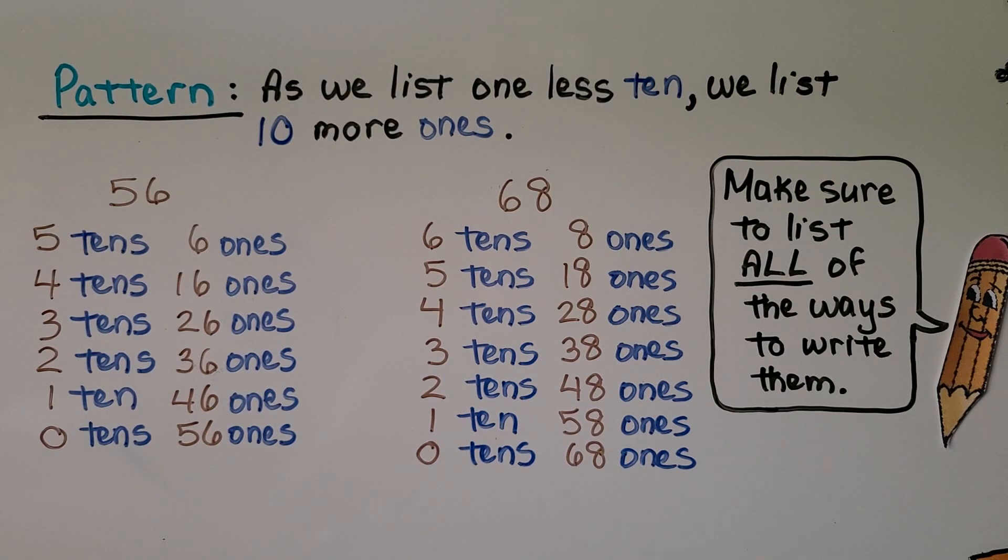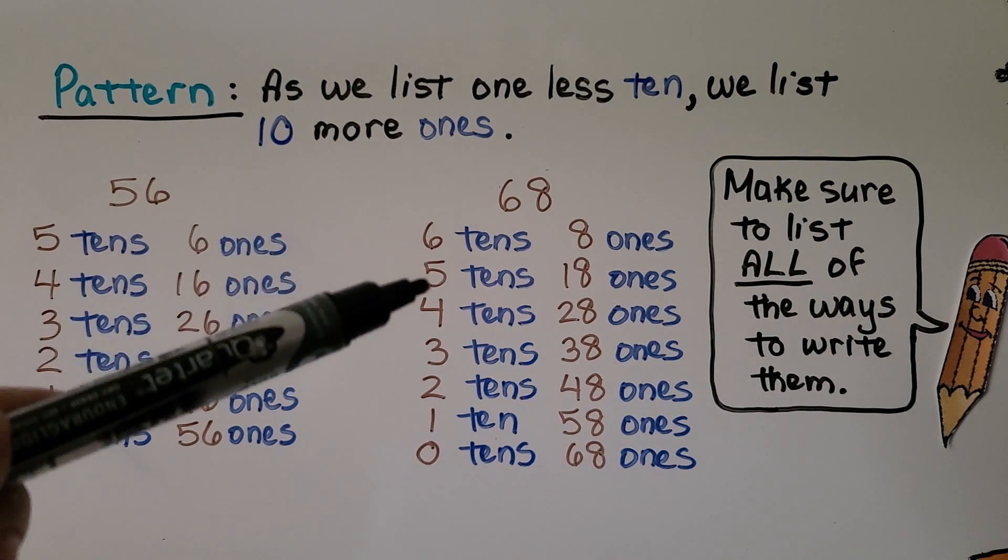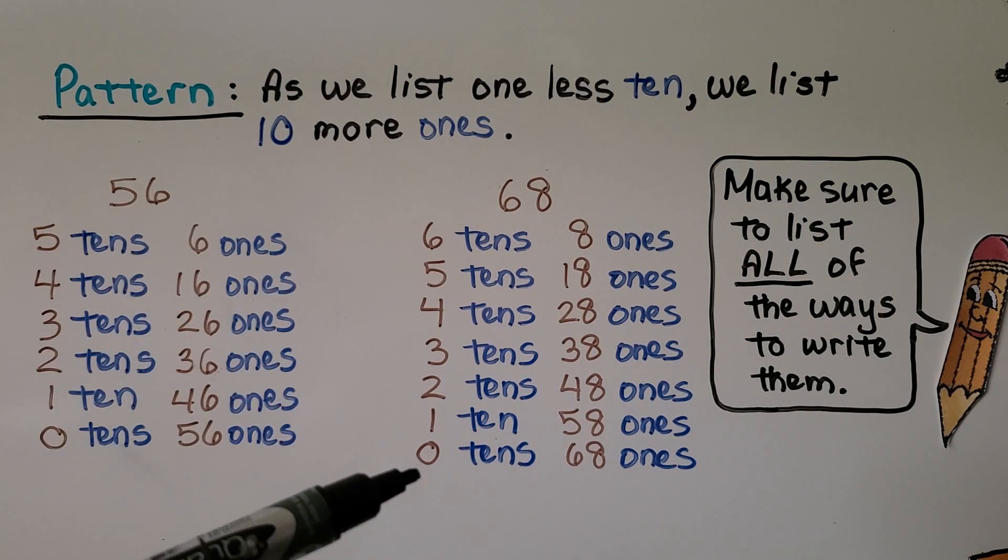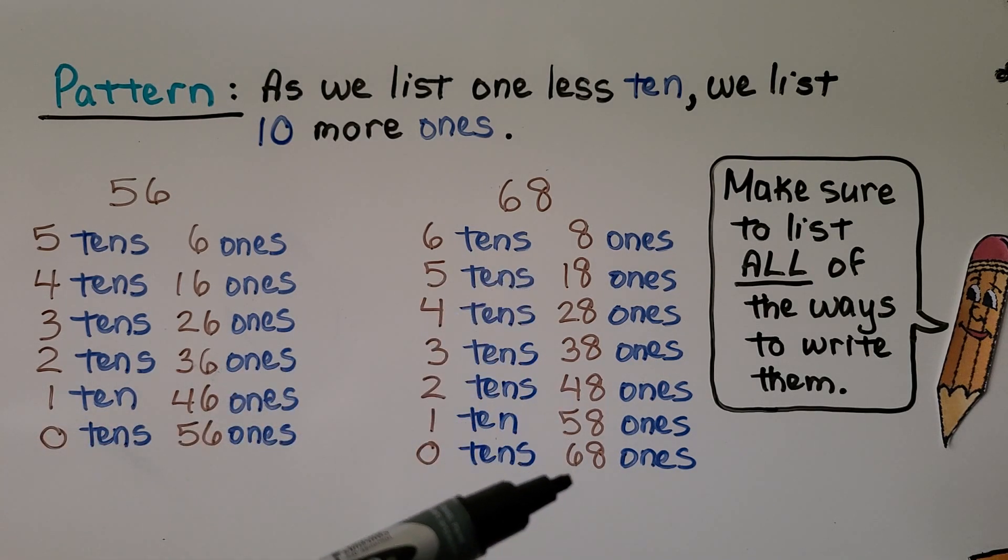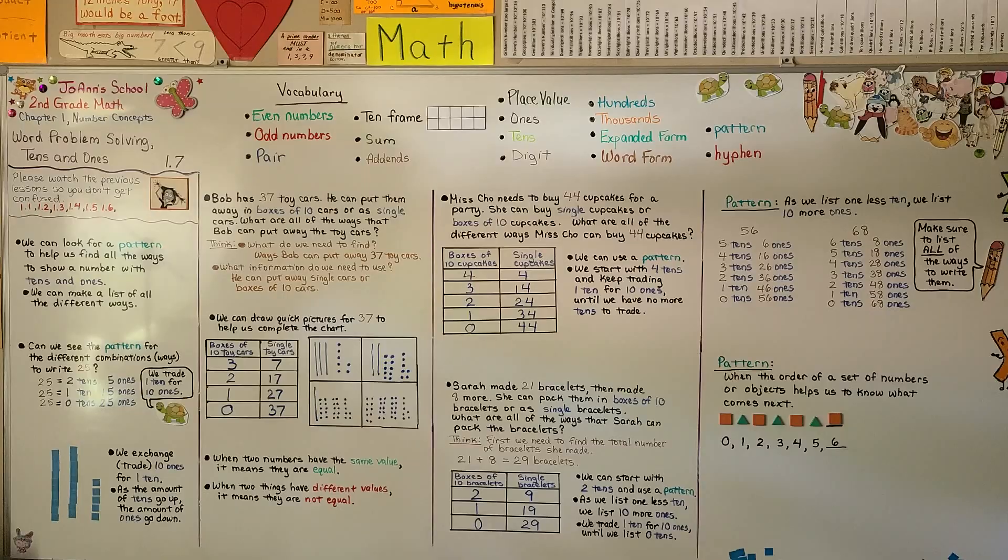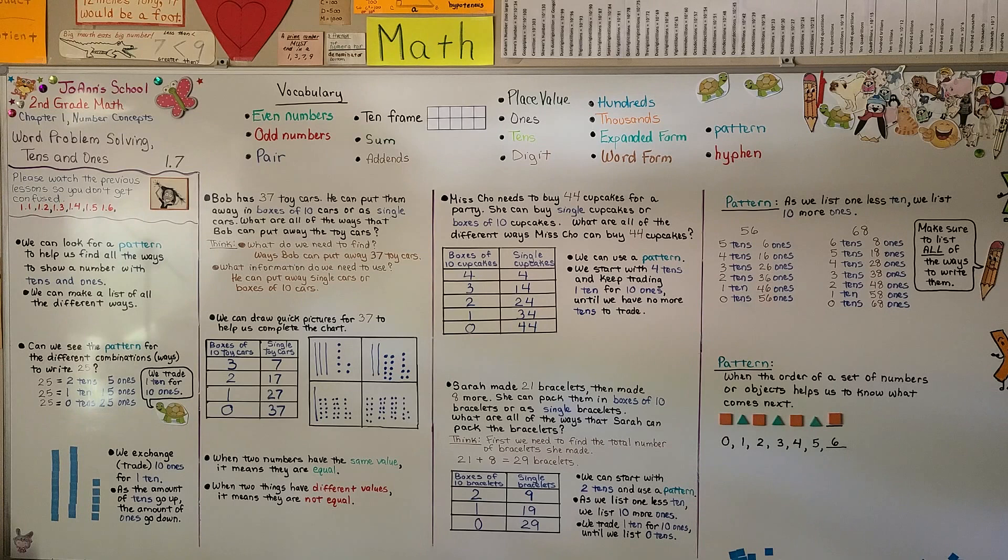If you look at the numbers carefully, you see these are each going down by 1 to 0. And this one is getting 10 more. So as you're doing this, make sure you list all of the ways to write them.